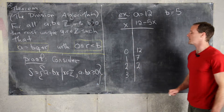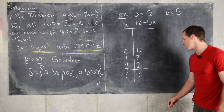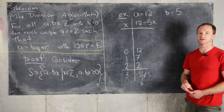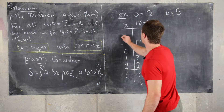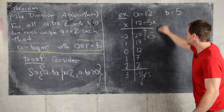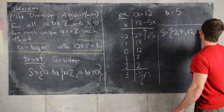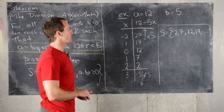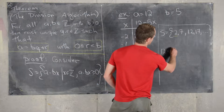If X equals 3 we get 12 minus 15, which is negative 3, and anything bigger gives more negative values, so those are not in S. But plugging in negative values works: X equals negative 1 gives 17, X equals negative 2 gives 22, and so on. So S is {2, 7, 12, 17, ...}. Notice 2 is the remainder and the corresponding X value of 2 is the quotient, since 12 equals 5 times 2 plus 2.